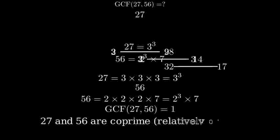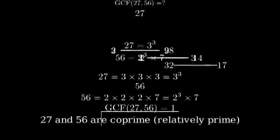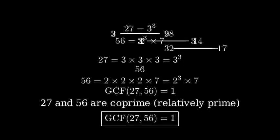This means that twenty-seven and fifty-six are coprime, or relatively prime, because their greatest common factor is one. In other words, these numbers share no common factors other than one. Therefore, the greatest common factor of twenty-seven and fifty-six is one.